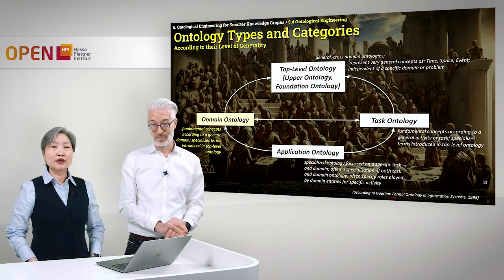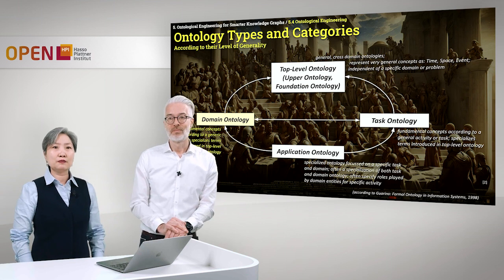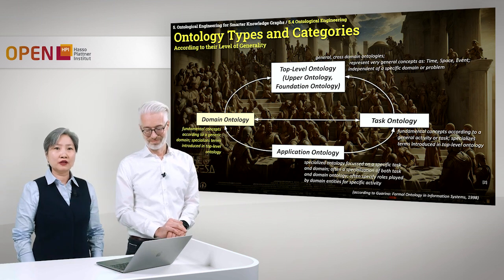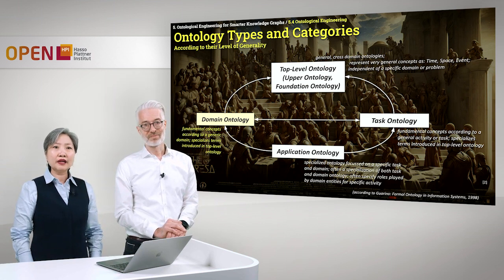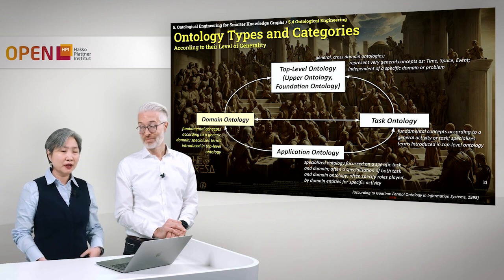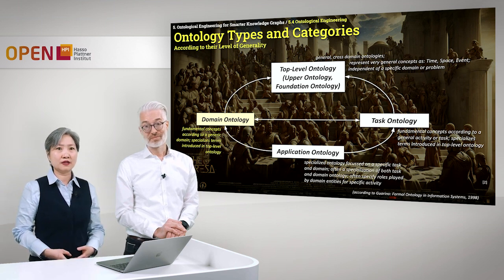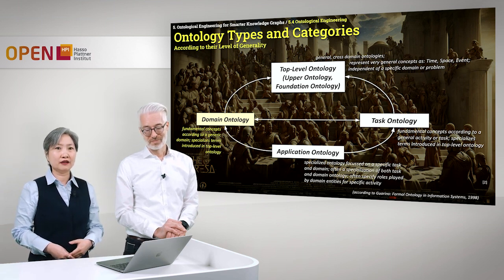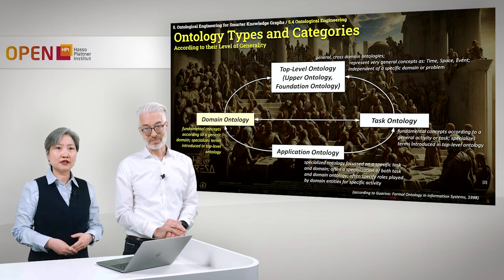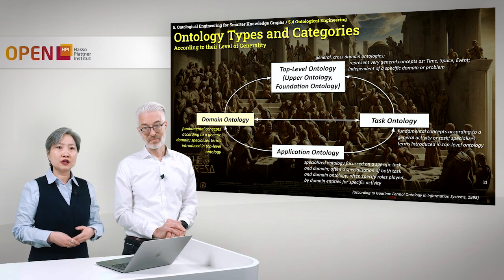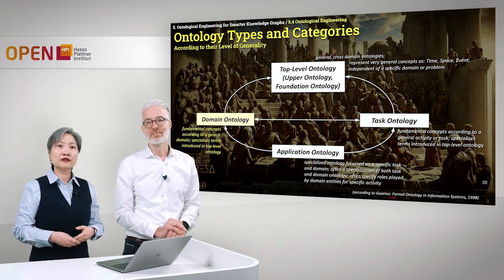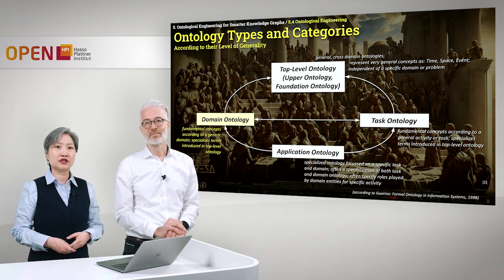Going down to specialization, we have domain ontology. In the domain ontology, we have the fundamental concepts according to a generic domain. We specialize the terms appropriate for this domain — terms that were already introduced in the top-level ontology.